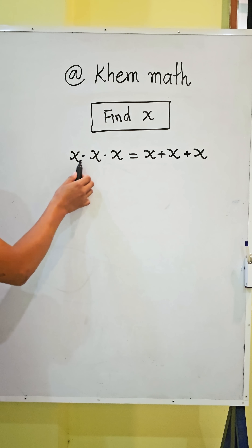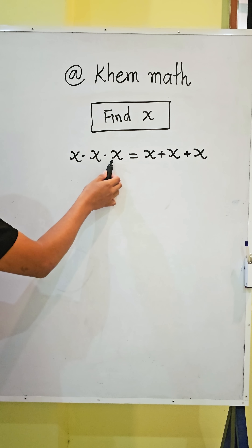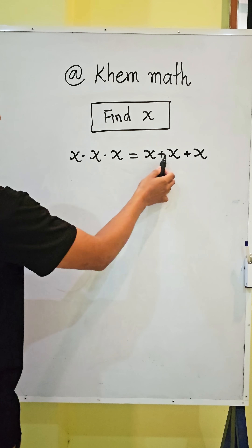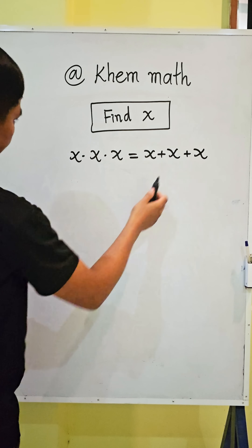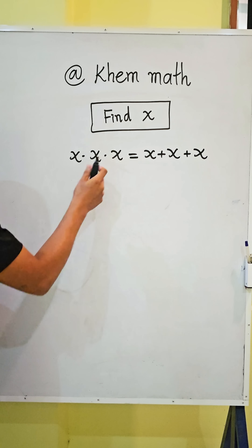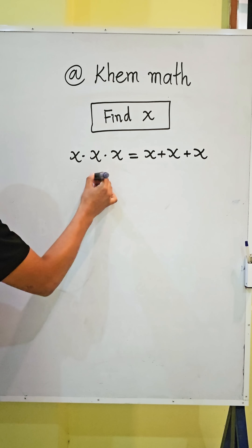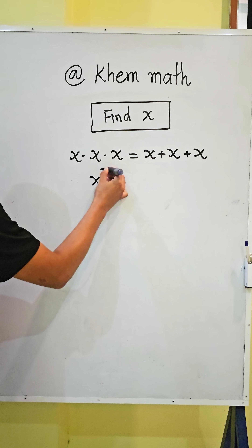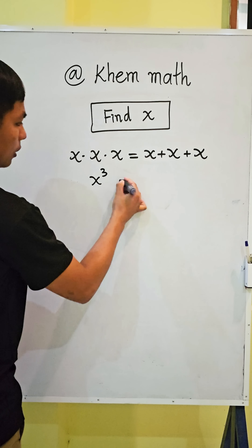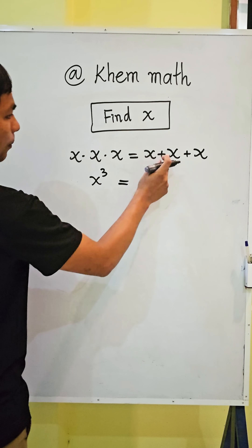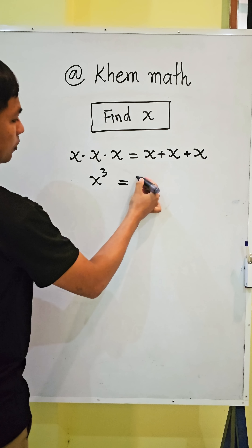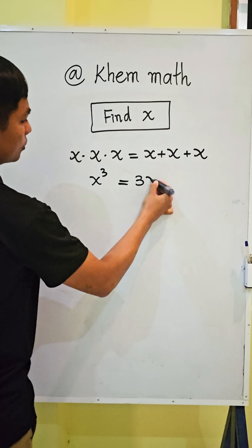Find x, where x times x times x equals x plus x plus x. Here, x times x times x equals x cubed, and x plus x plus x equals 3x.